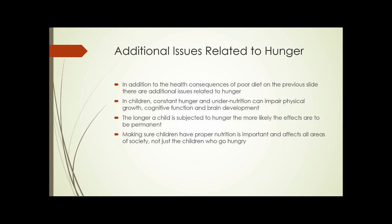In addition to the main culprits we think of — obesity, heart disease, diabetes — there are additional issues related to hunger in children. Constant hunger and undernutrition can impair physical growth, cognitive function, and brain development. The longer a child is subjected to hunger, the more likely the effects are to be permanent.